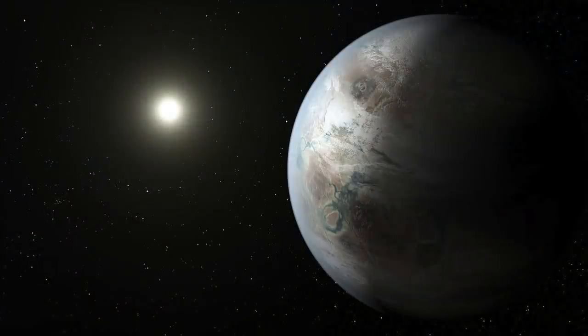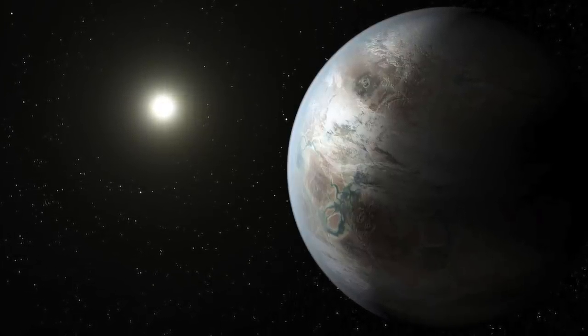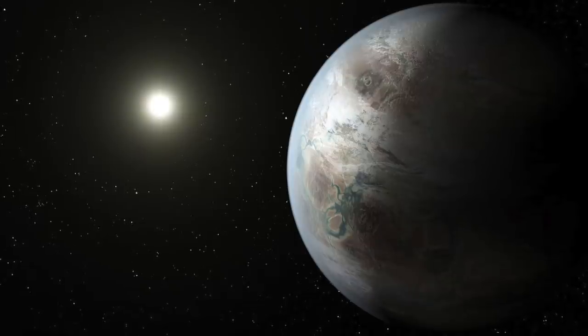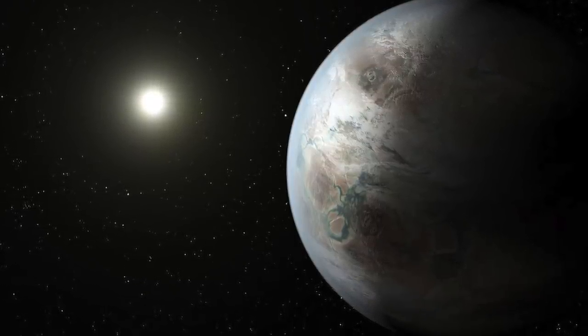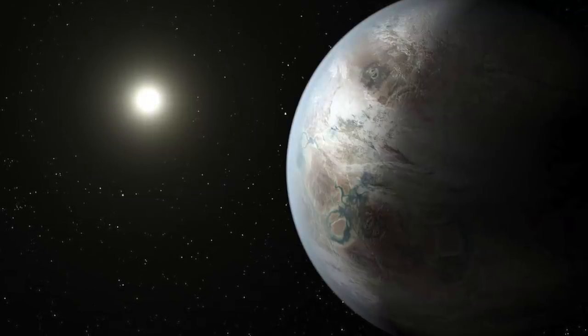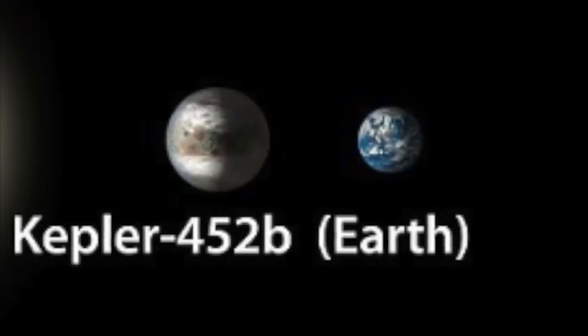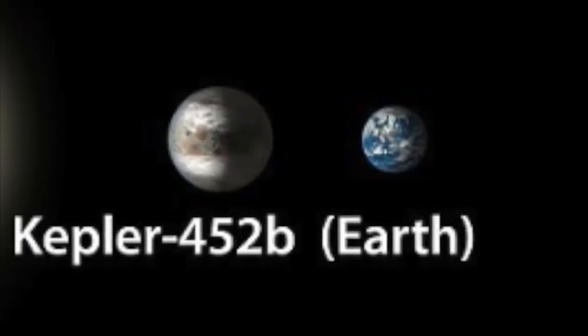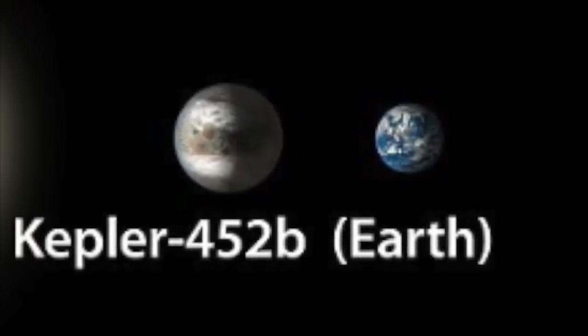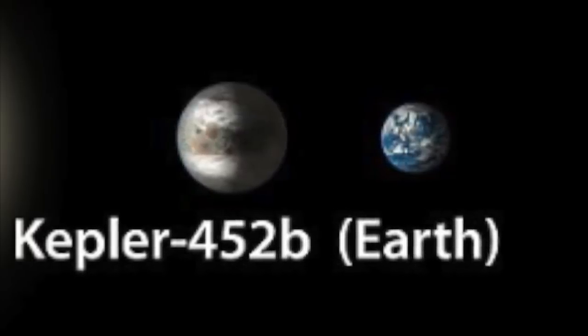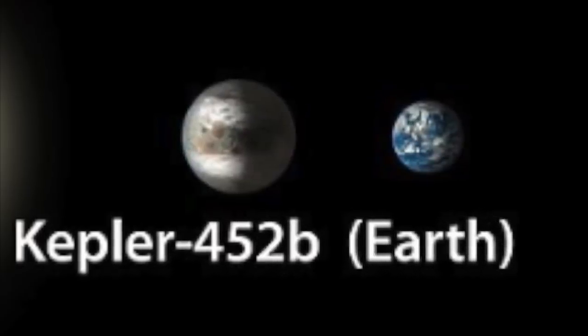One such planet that may have intelligent life is known as Kepler 452b. It's known as Earth 2.0 because of its Earth-like characteristics. This planet is orbiting a sun-like star around 1,400 light-years away from Earth. The planet was discovered by NASA in 2015. Scientists believe this planet to be rocky and there might just be oceans on its surface as well. However, getting there or even getting in touch with the aliens that might be residing there is surely not a possibility for many centuries to come.